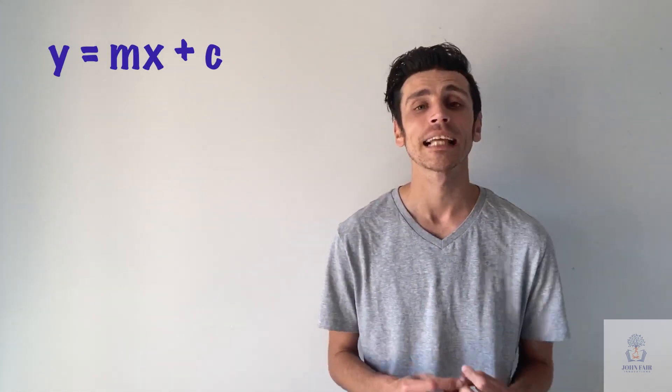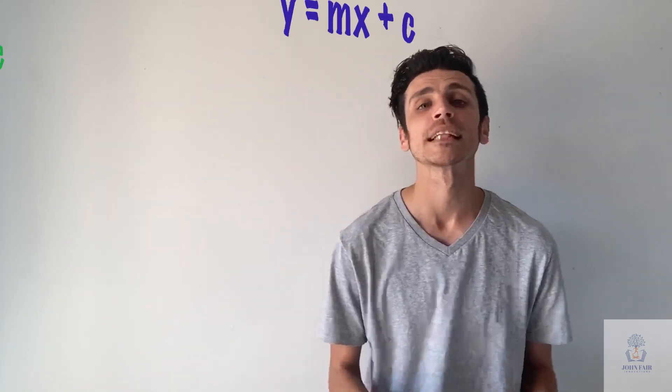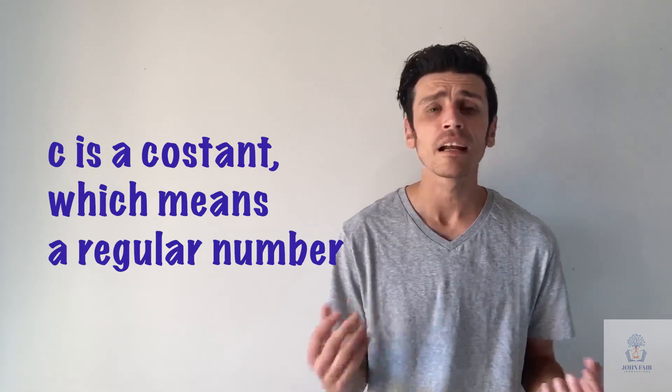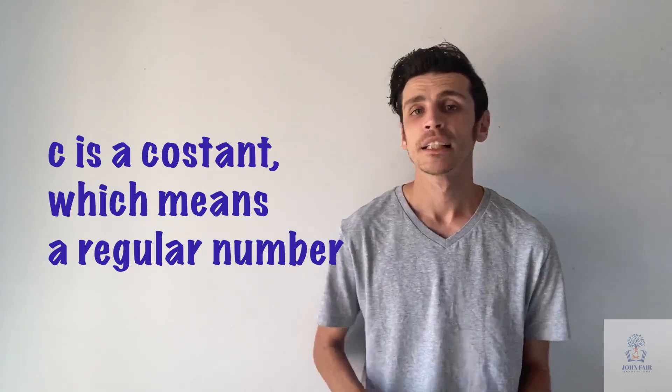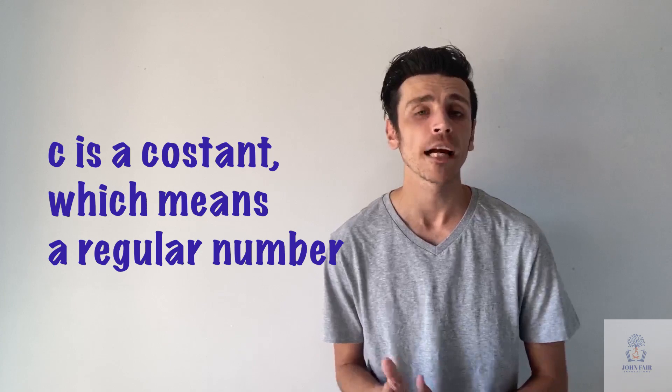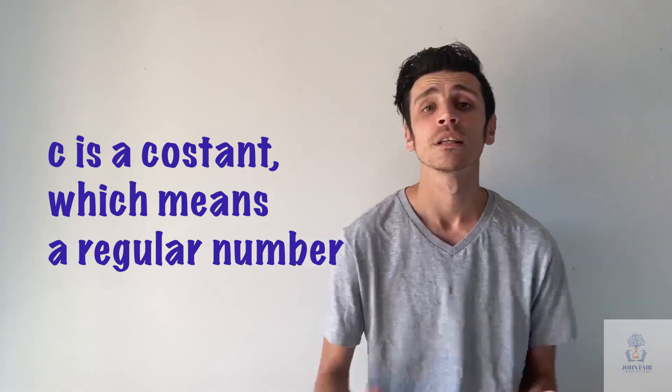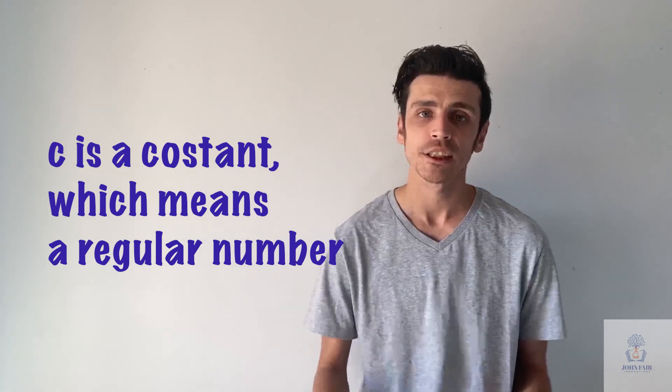Our last component is our c, which represents constant. And a constant is just a number. So again, it can be a whole number, it can be a fraction, it can be a decimal, whatever format you're using, it's just a number.